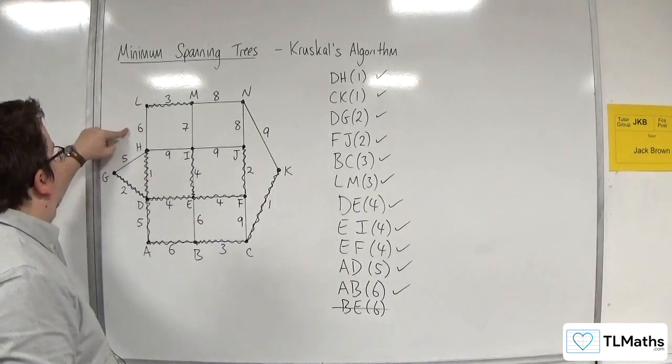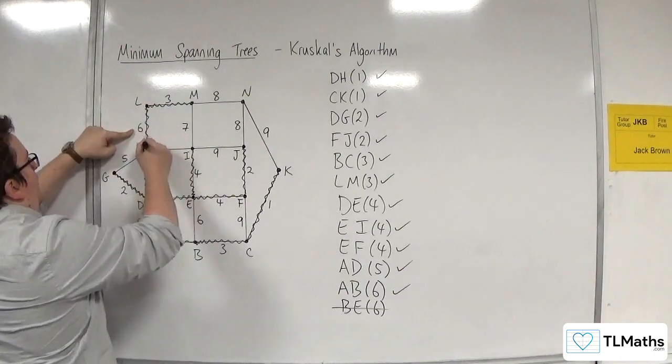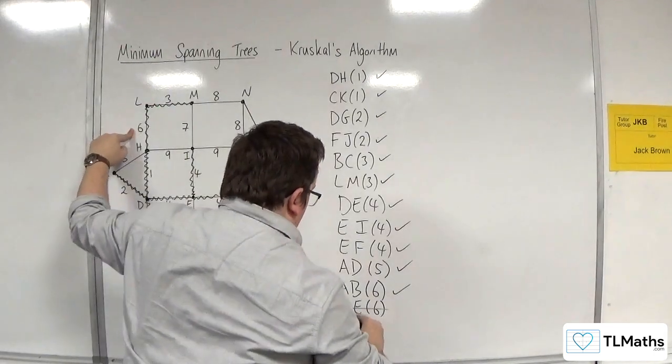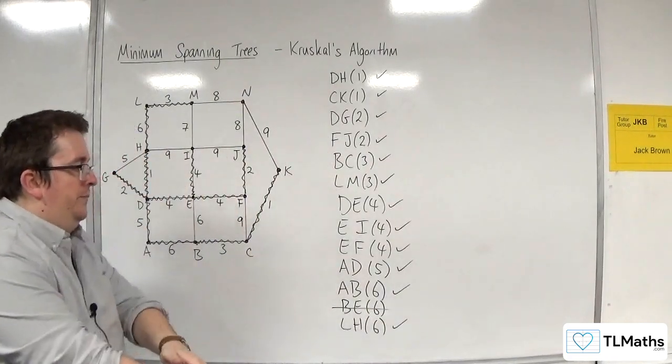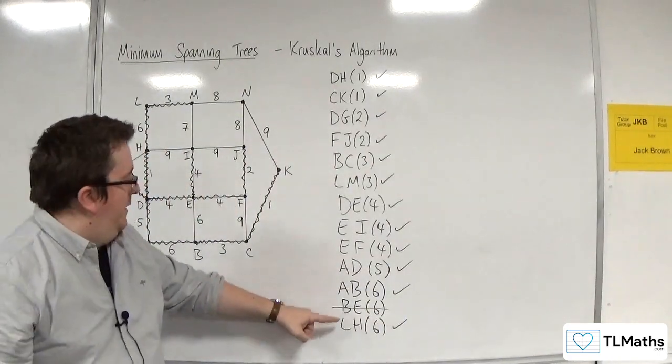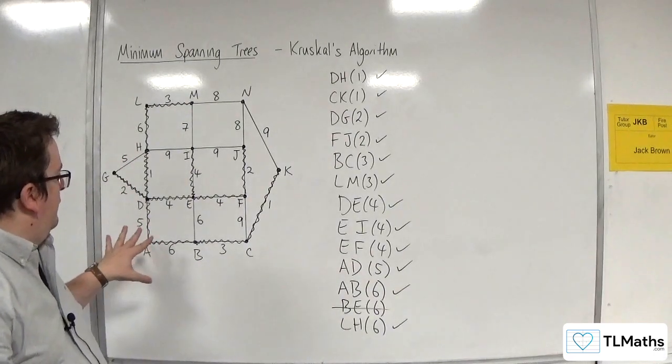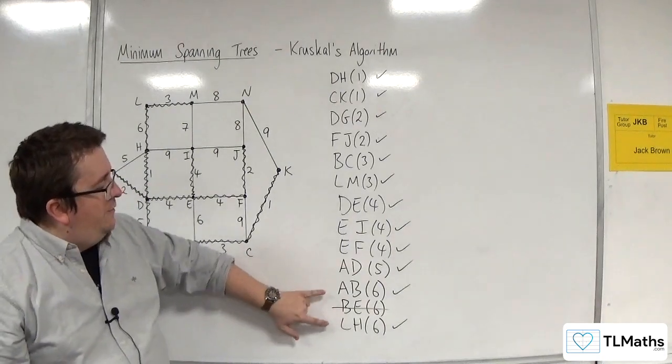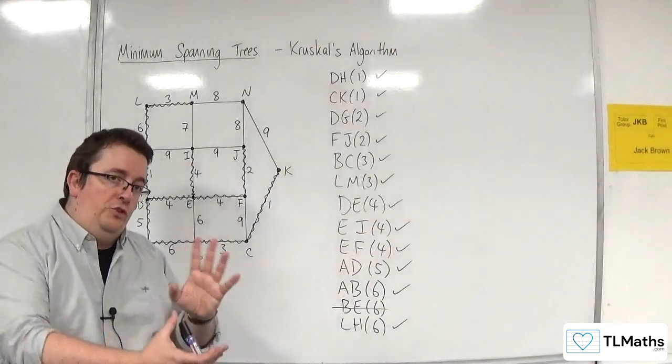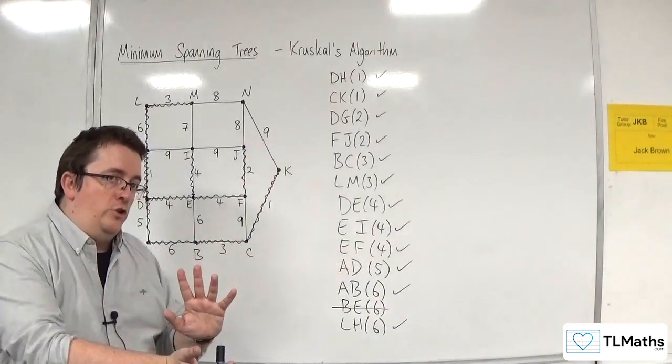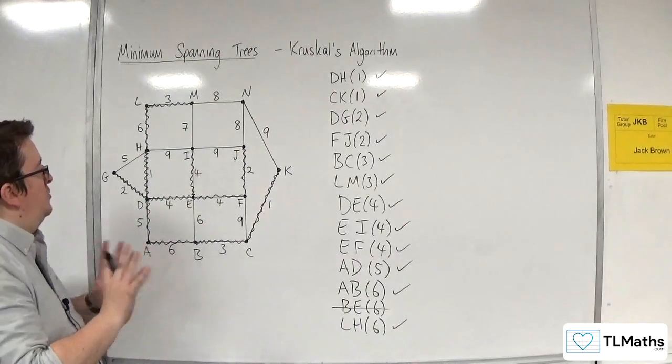There's another 6 up here, which is LH. Now that won't cause a cycle. So I'll have that. Now, because of this, you can have slightly different answers come up depending on the order that you have considered the edges. That can happen. Just so you're aware.